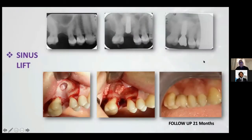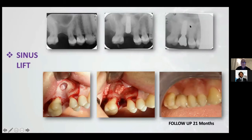This is a sinus lift to understand what happened in the sinus. We placed the material, opened the flap, and inserted the prosthesis. The result is that the material was transformed into bone. It's impossible to find the difference between the bone and the material inserted inside the sinus.